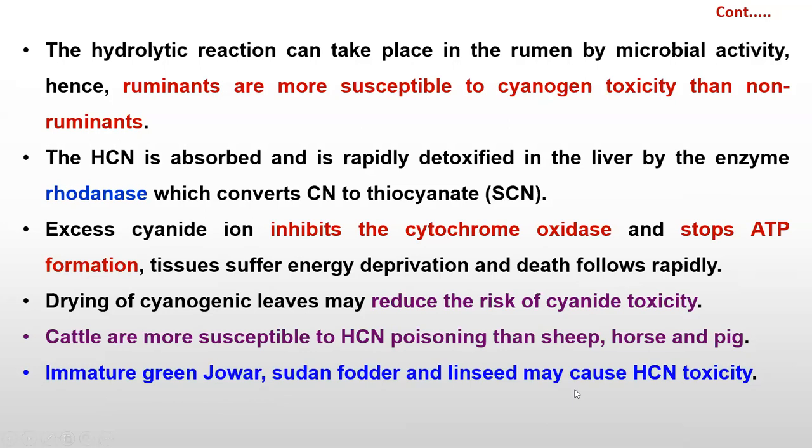Immature green sorghum, Sudan fodder, and linseed — linseed seeds are more prone to cause HCN toxicity. Linseed seed also causes toxicity of HCN.